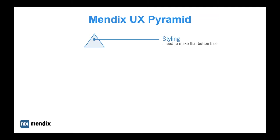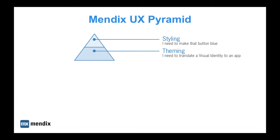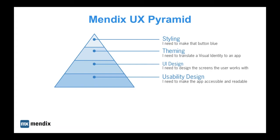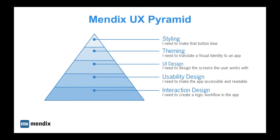Secondly, UX design. Let's look at the Mendix UX pyramid covered in an earlier webinar by my colleague Russell Hyde. Most of you will be familiar with styling, where we alter the visual appearance of elements such as a button. Theming is about translating a visual identity — such as a corporate identity — to an application. UI design takes it a step further by designing full pages the user will see. Usability adds a layer ensuring the application can be worked with and is accessible. Interaction design deals with screen-specific details as well as entire workflows. Mix all of the above and add human emotion and we arrive at experience design.